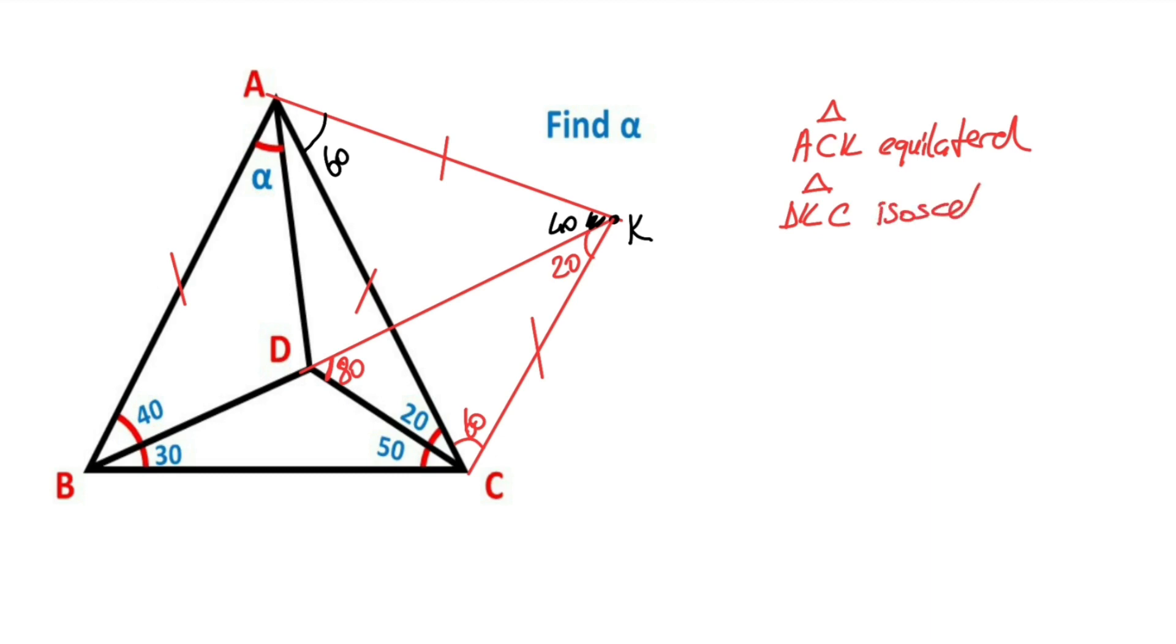Therefore DK must be equal CK, so the length of DK must be equal to the others. And then if you focus on this triangle, it is an equilateral triangle.